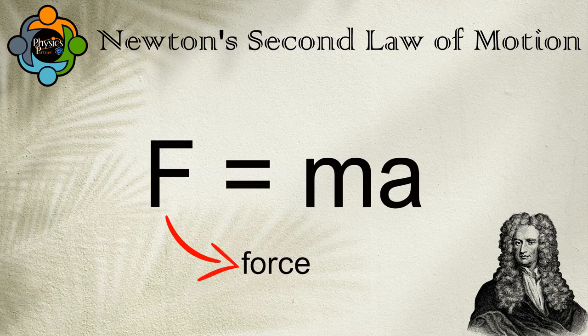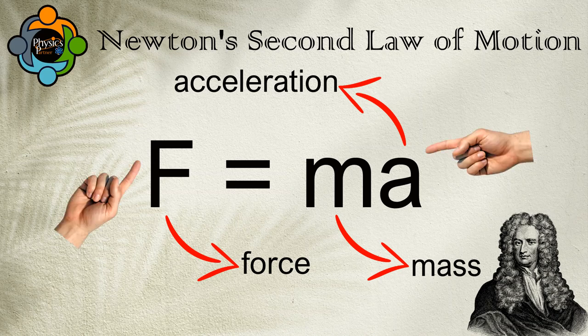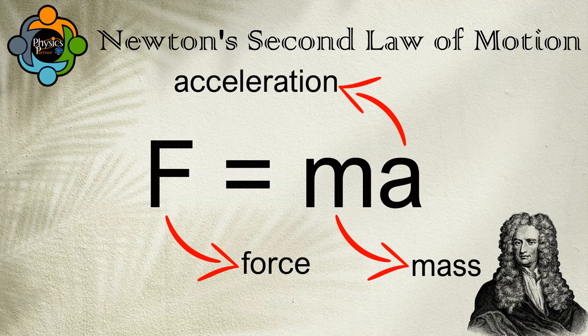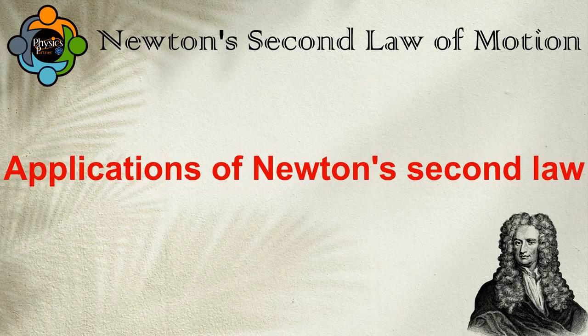In the formula, F represents force, m represents mass, and a represents acceleration. Remember: F and a are both vector quantities because they require a specific direction, whereas mass is a scalar quantity.